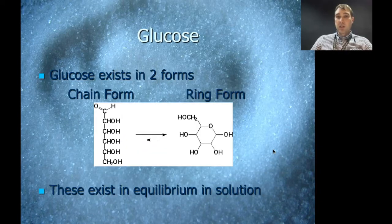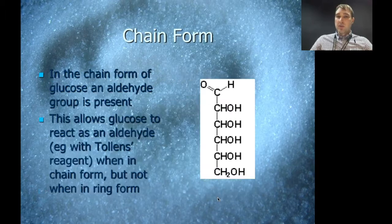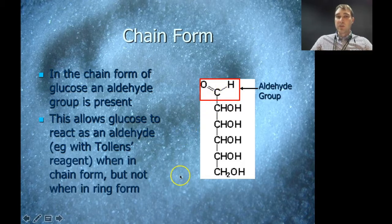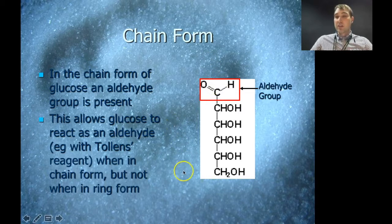Something interesting about glucose is that when you put it in solution it exists in two forms: a chain form and a ring form. In solution, the majority of molecules sit in the ring form, but a certain number exist as the chain form, so these are found in equilibrium in solution. In the chain form, an aldehyde group forms at the end of some glucose molecules, meaning those molecules will react as an aldehyde — for example, they'll react with Tollens' reagent. Some recipes for demonstrating the Tollens' reaction use glucose as the aldehyde being oxidized.